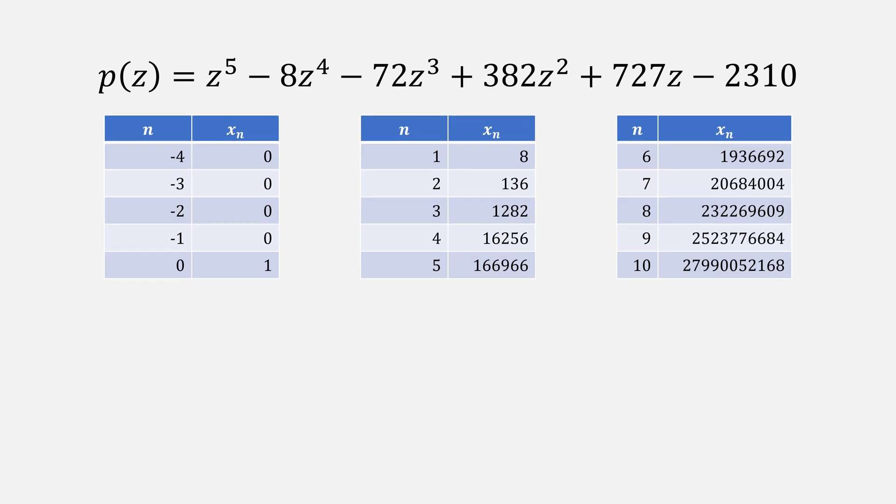Now we can compute our values for q using two values for x's. In this case, 8 over 1 gives us 8, 136 over 8 gives us 17, 1202 over 136 gives us 9.4 and keep going.